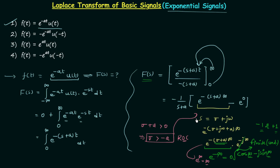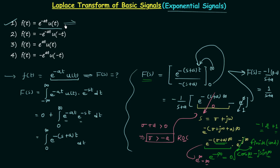When this condition holds, we get 0 from the upper limit. So the Laplace transform becomes minus 1 over (s+a) multiplied by (0 minus 1), since e^0 = 1. This gives us 1 over (s+a). So the signal e^(-at)u(t) has the bilateral Laplace transform equal to 1/(s+a), with region of convergence σ greater than minus a, or equivalently, the real part of s greater than minus a.